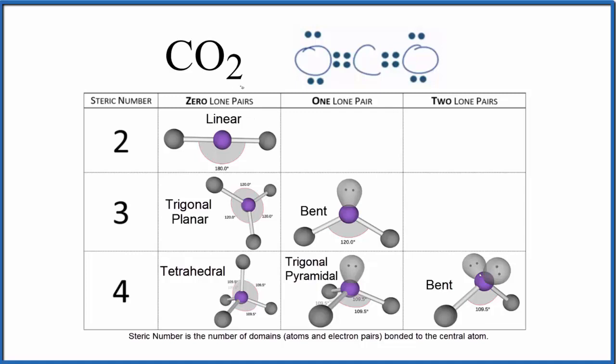We start with a valid Lewis structure. Here's our Lewis structure for CO2, and we want to know what the steric number is. The steric number is the number of things bonded to the central atom.